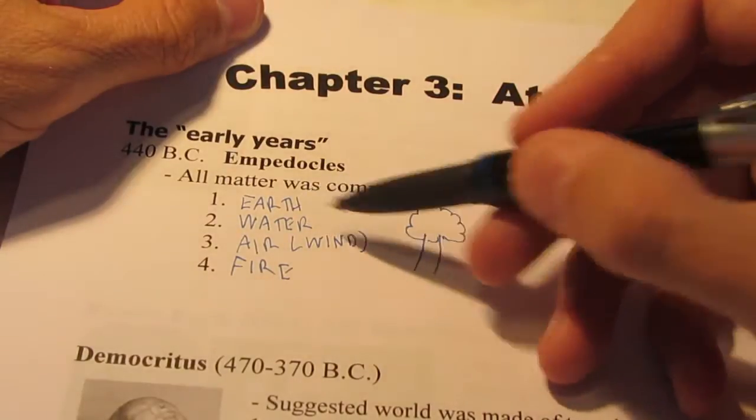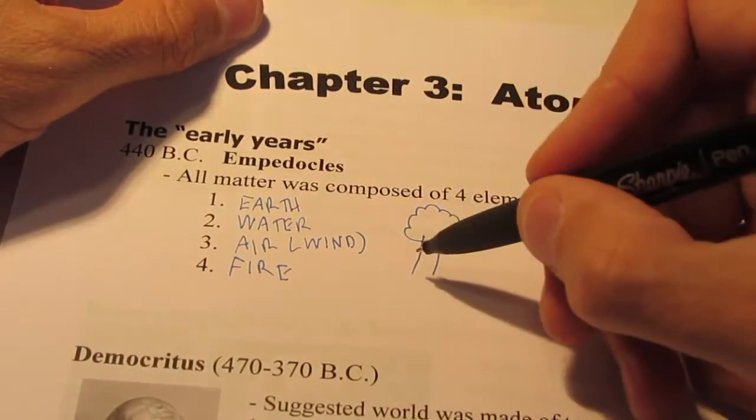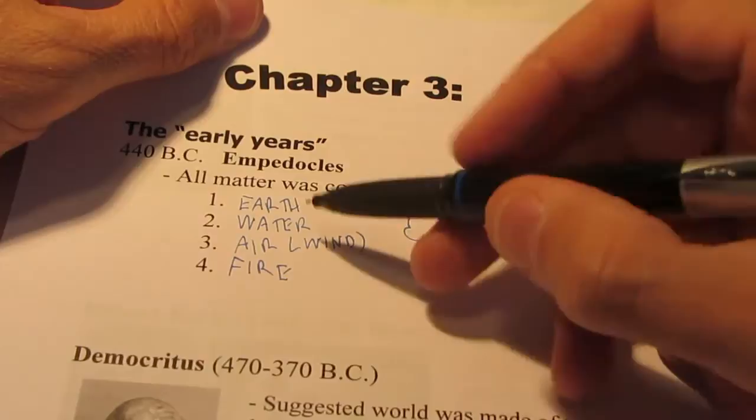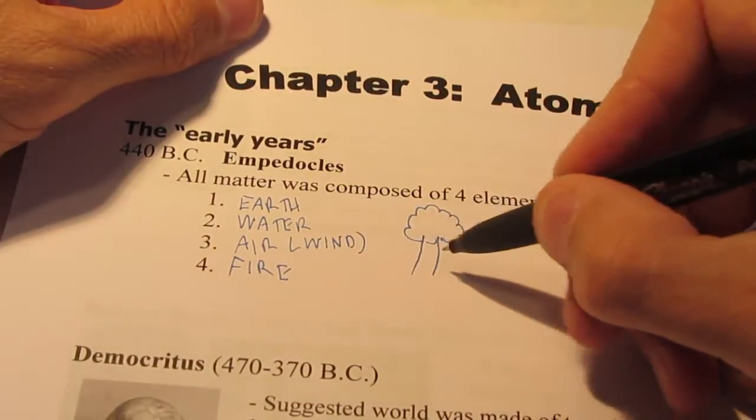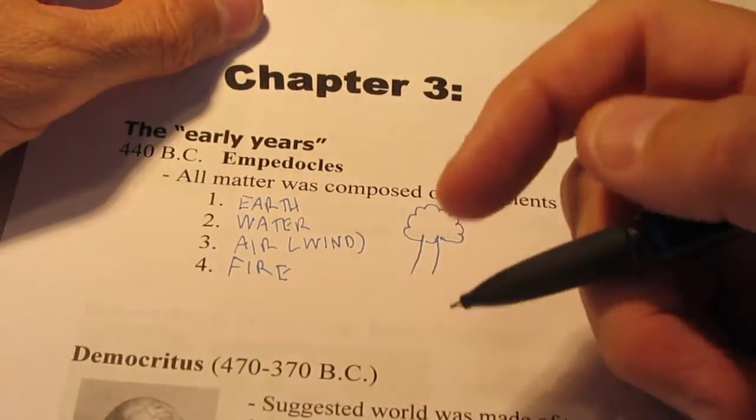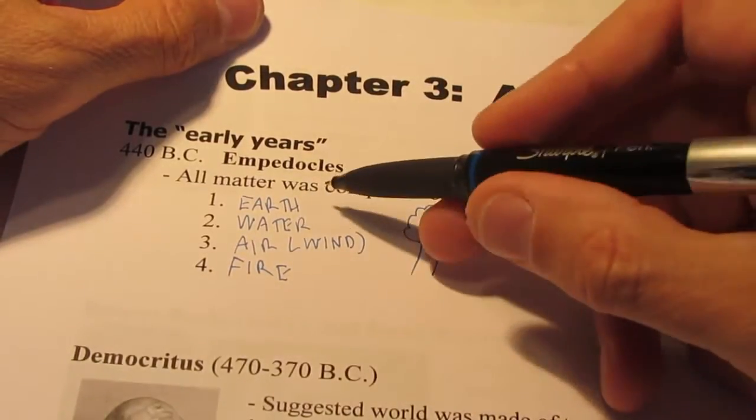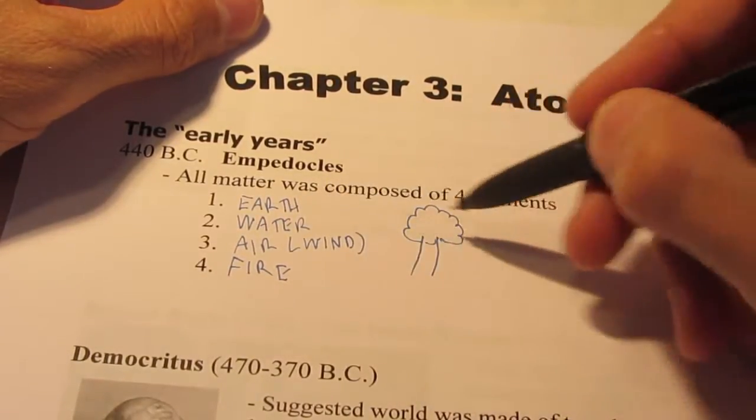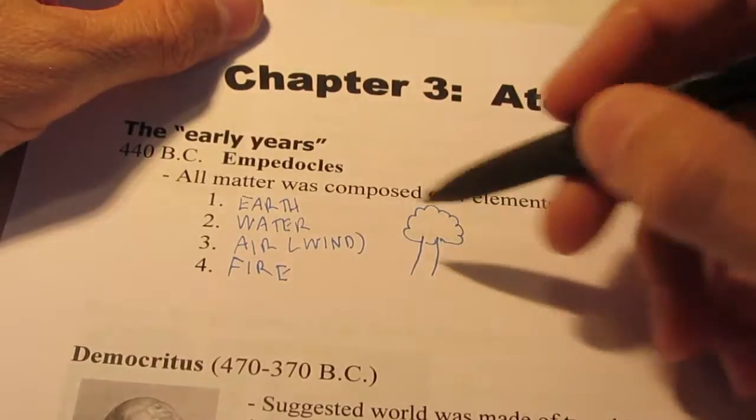Well, obviously it came from the earth, didn't it? The earth composed the matter of that tree, along with, of course, the water, because if you had chopped that tree down, you can see moisture inside that tree. You can see the sap. So that tree contains earth and water, and as the wind blew, of course, that's creating air.